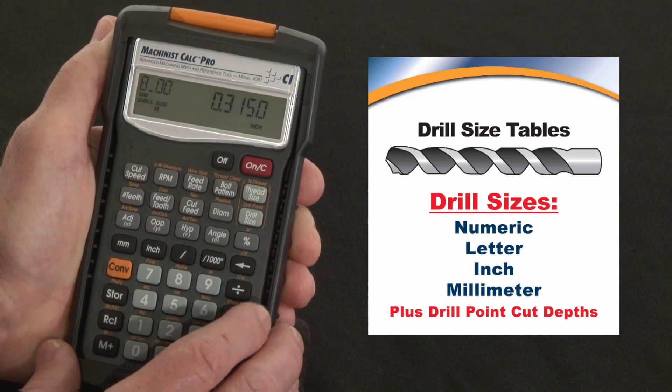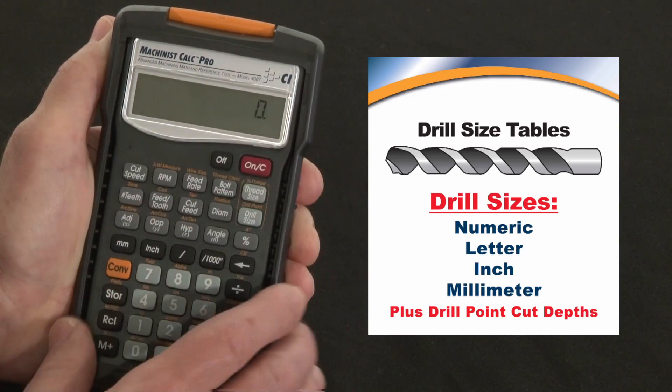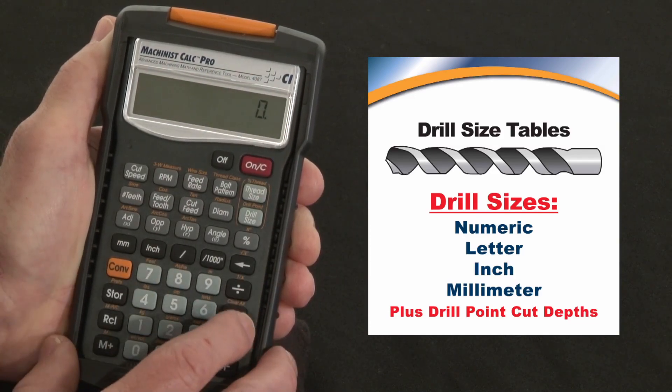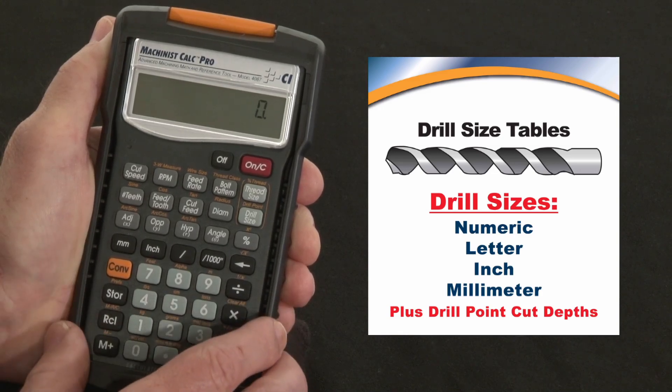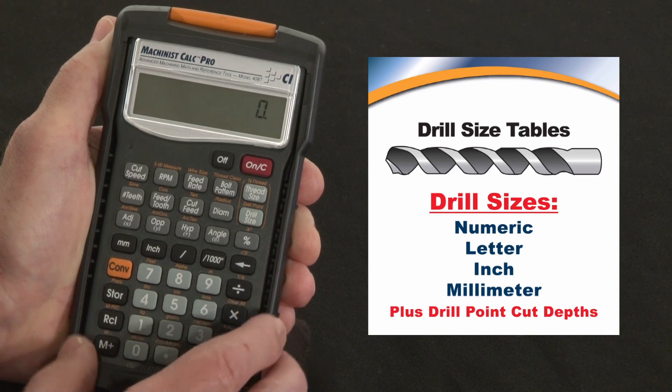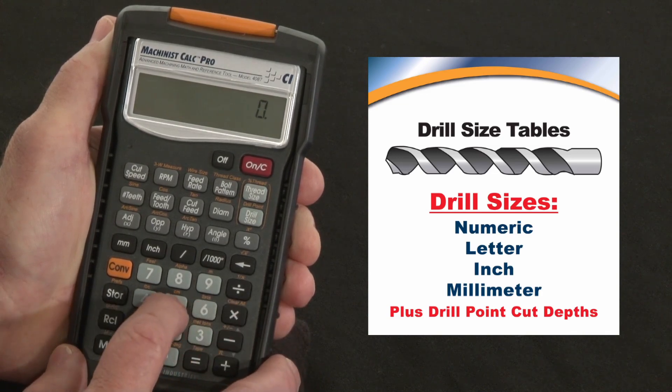Say for example you're working with your favorite letter alpha size E drill bit. The way you put in alpha sizes here is that the alphabet correlates to the numbers, so A is 1, Z is 26, so I happen to know that size E is number 5.